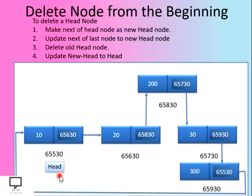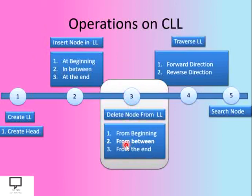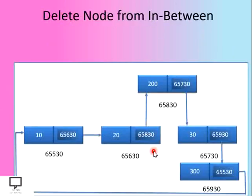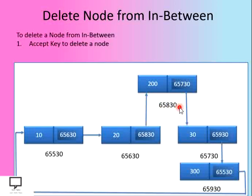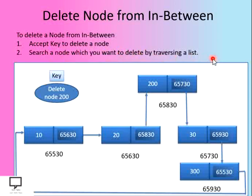In this way we have deleted a node from the beginning — the first head node. Now the second case: deleting a node from in between. To delete a node from in between, first we accept a key node from the user which we want to delete. Let's say the key node is 200. Then we search for that node by traversing the list — if the node is present we can delete it; if not, we cannot.